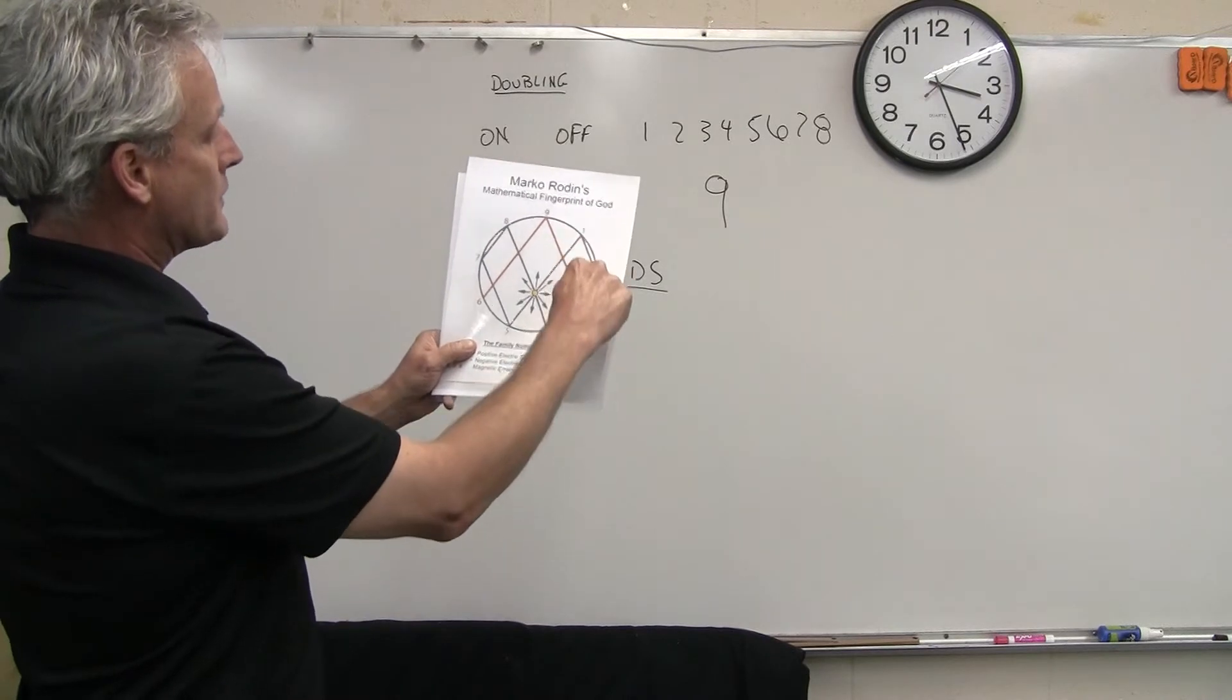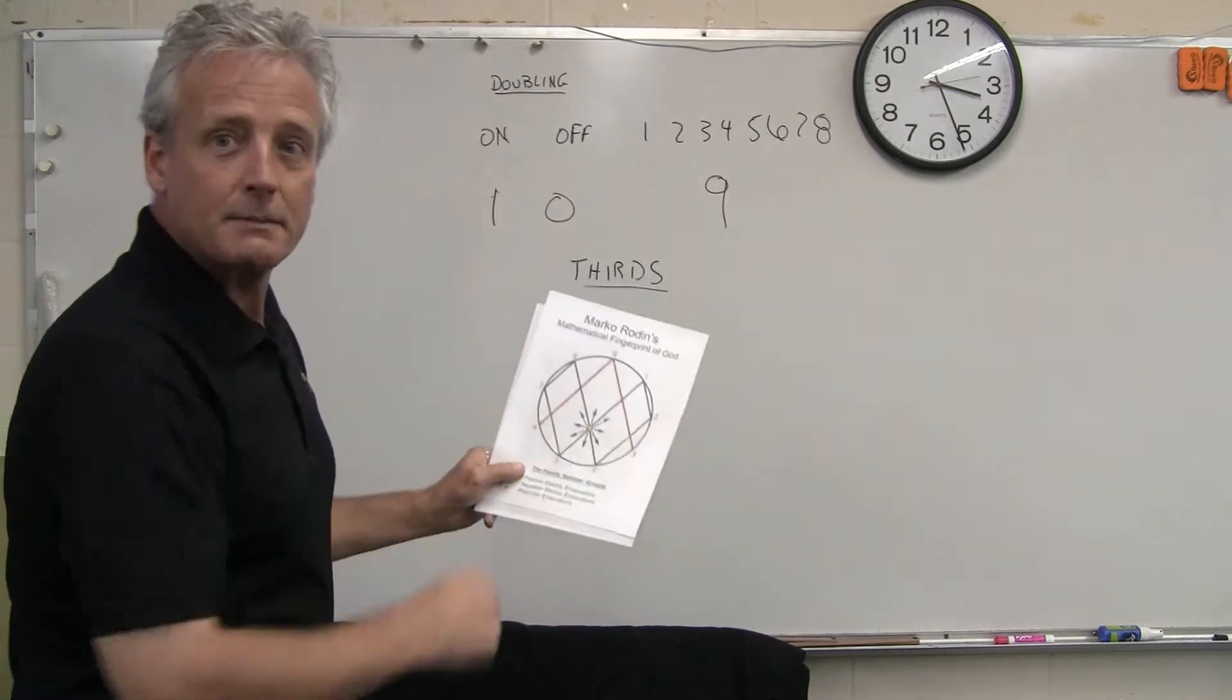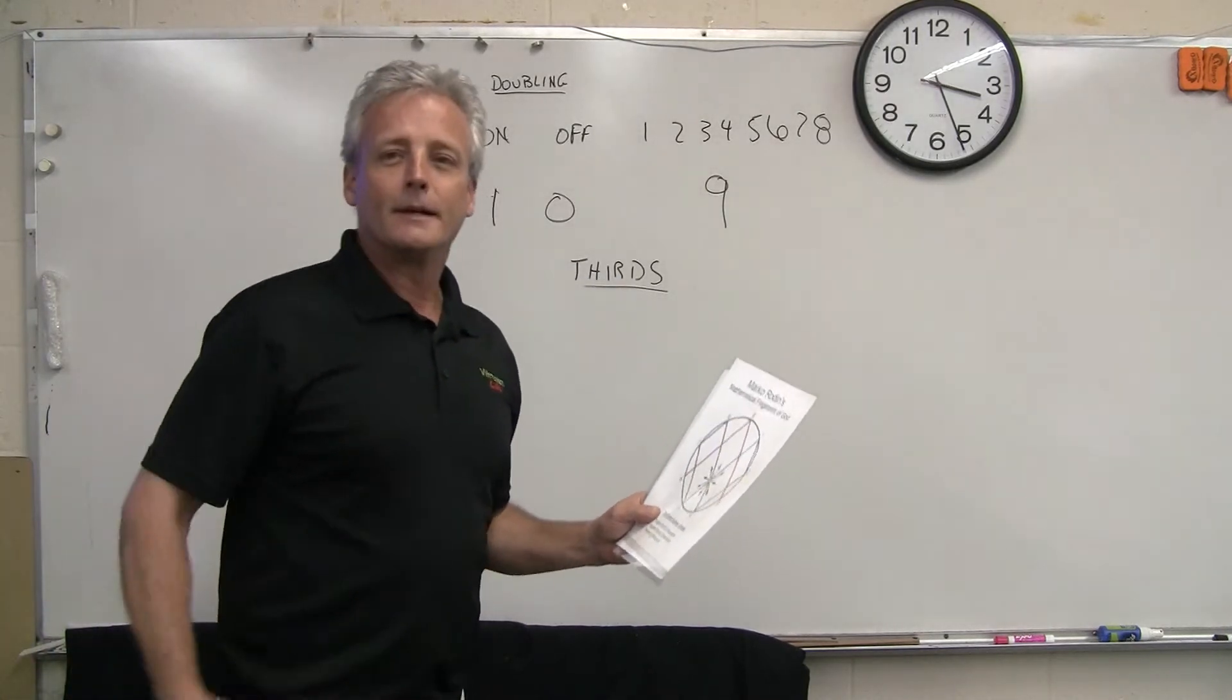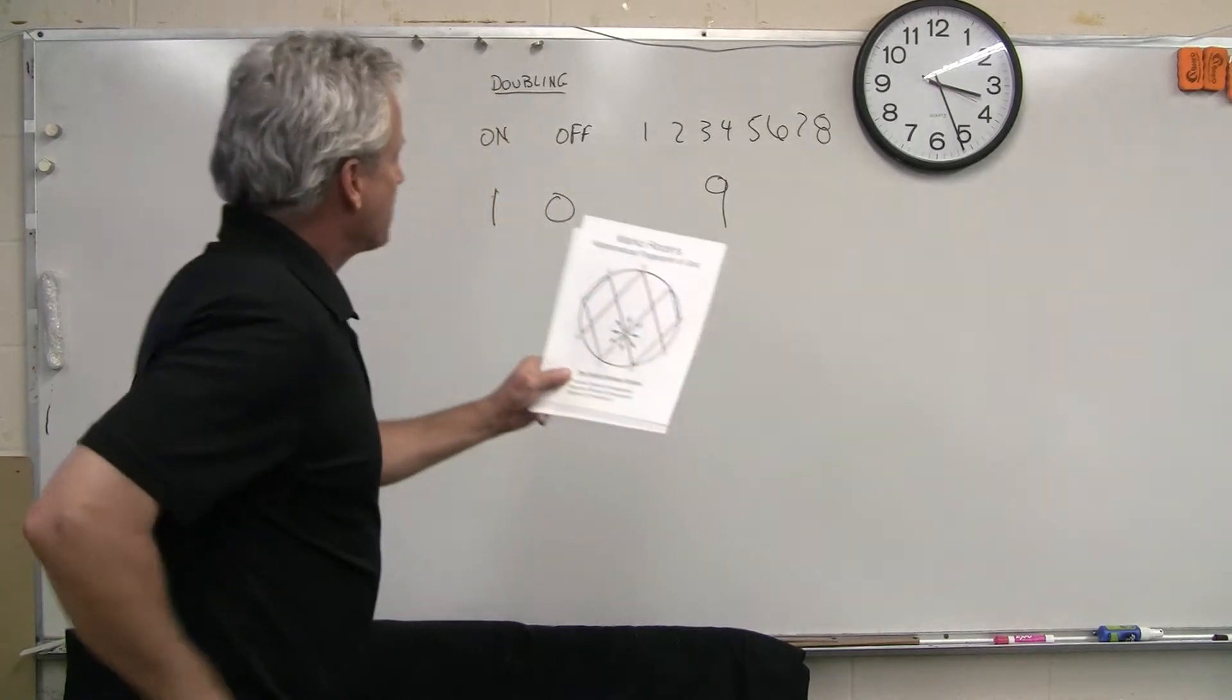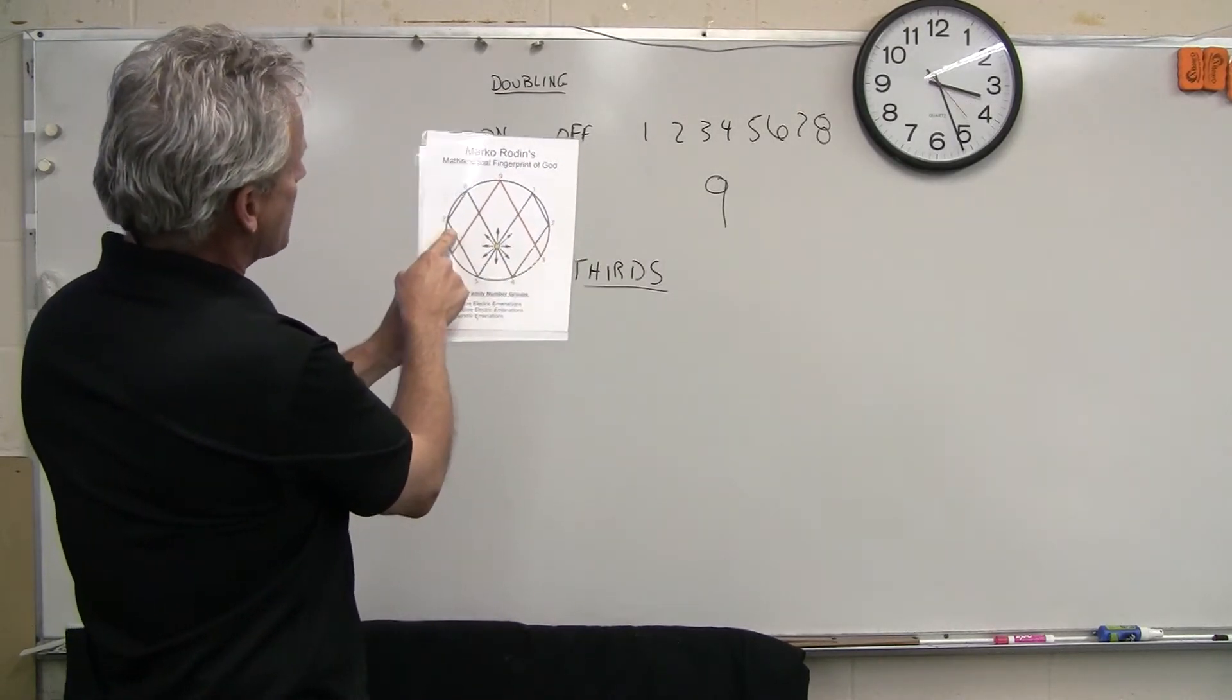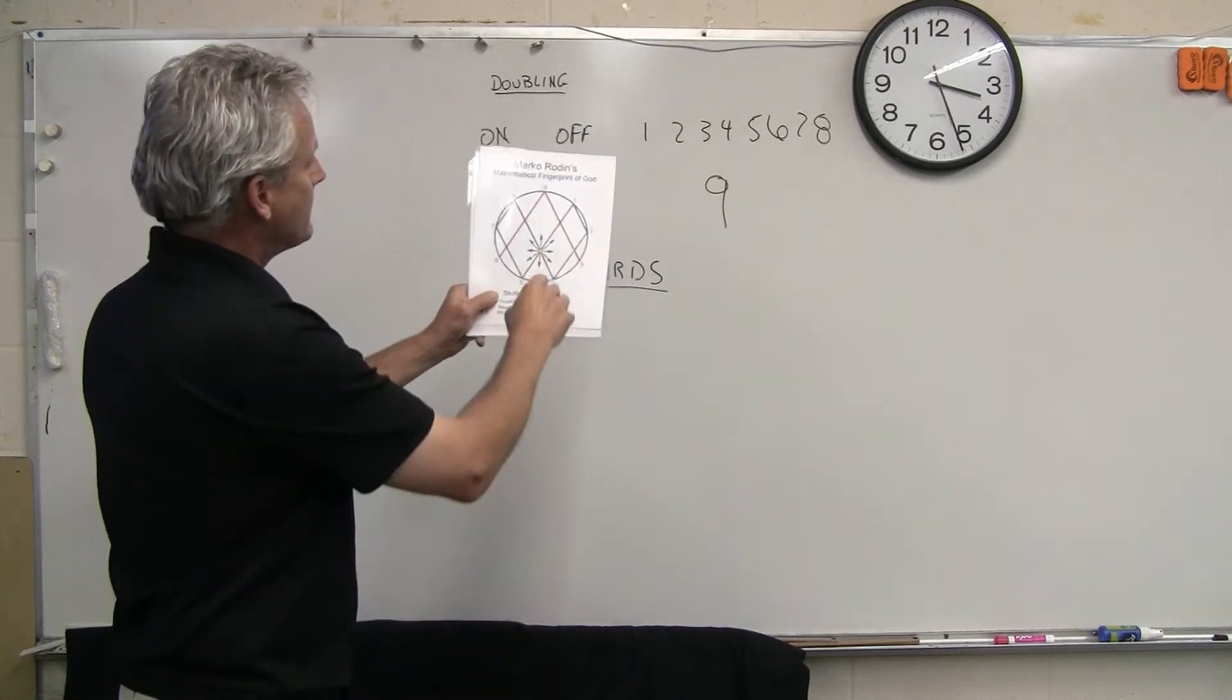One and one is two, two and two is four, four and four is eight, eight and eight is 16, but the one and six make seven. Eight and eight is 16, one and the six make the seven, seven and seven is 14, one and the four make five, five and five is ten. So that's the doubling.